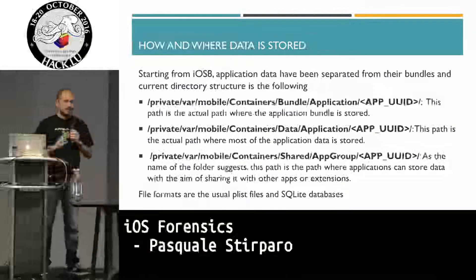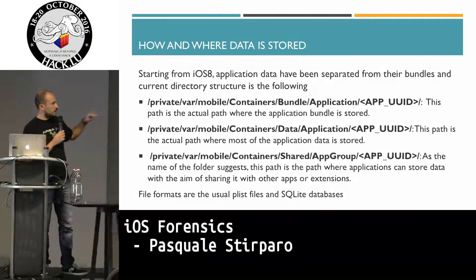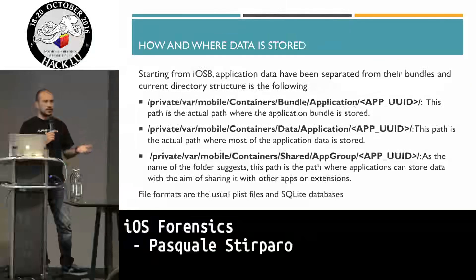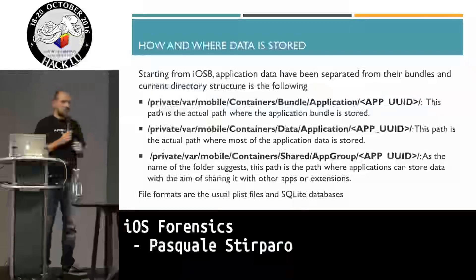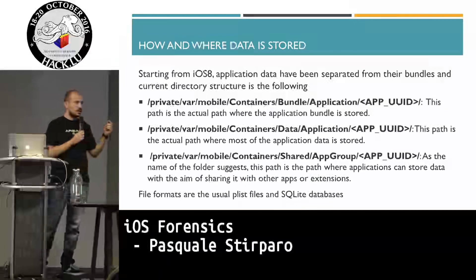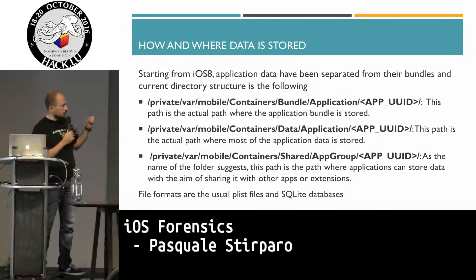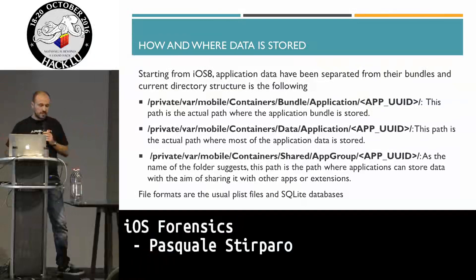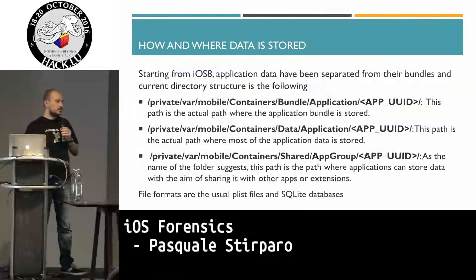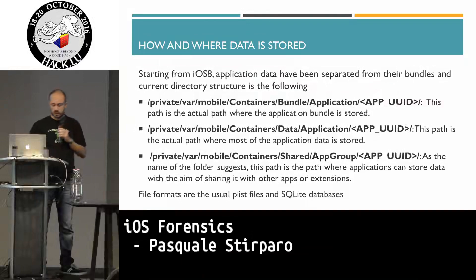A bit of quick background information that is needed. When you manage to have full access to the device and you want to know where the data are, since iOS 8 Apple decoupled the location of the bundles of the application from the data. So we get a bundle folder which contains the bundle, a data folder where most applications store their data, and a shared app group folder — the location where applications store data they want to share or use to interact with other applications. File formats are the usual in the Apple environment, like plists for configuration files, and data are almost always stored in SQLite databases.